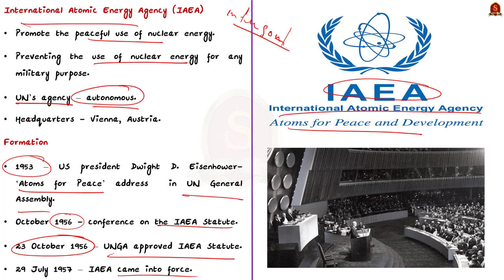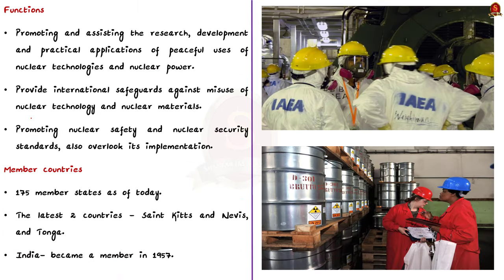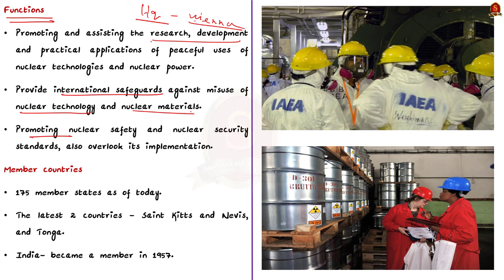The IAEA is an autonomous organization, though it reports to both the UN General Assembly and the UN Security Council. Its headquarters is in Vienna, Austria, and it also has two regional safeguard offices located in Toronto, Canada and Tokyo, Japan. Its important functions include serving as a forum for promoting research, development and practical application of peaceful uses of nuclear technologies; providing international safeguards against the misuse of nuclear technology and nuclear materials; and promoting nuclear safety and security standards and overseeing their implementation.